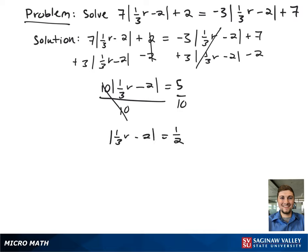Now that we have the absolute value term by itself, we can rewrite this as two cases: one-third r minus 2 equals one-half, or one-third r minus 2 equals negative one-half.